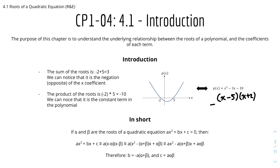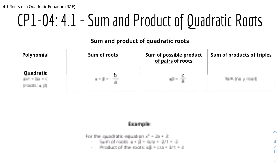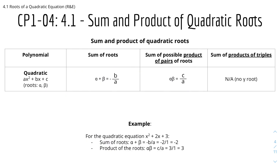This is a short summary that will make things much clearer. For the sum and product of quadratic roots, given the quadratic polynomial ax squared plus bx plus c with roots alpha and beta: the sum of roots is alpha plus beta equals minus b over a, where b and a are the coefficients. The product of roots is alpha times beta equals c over a.